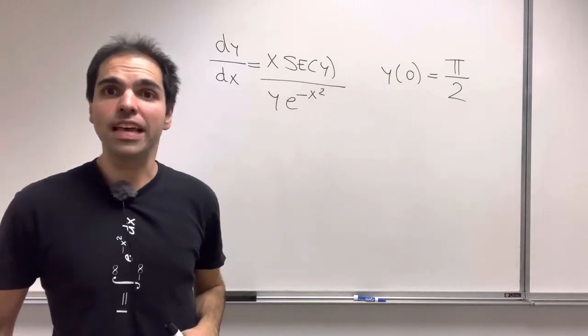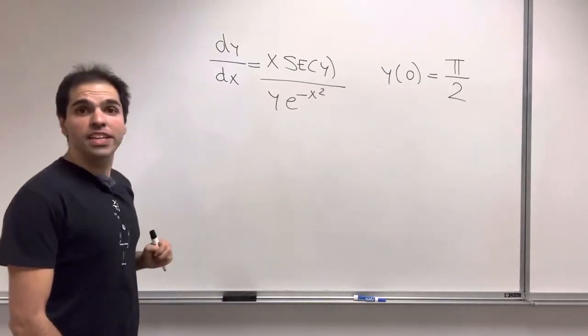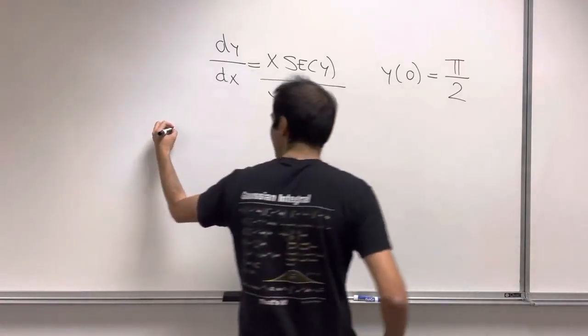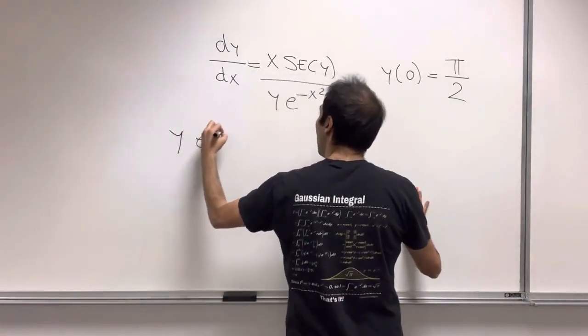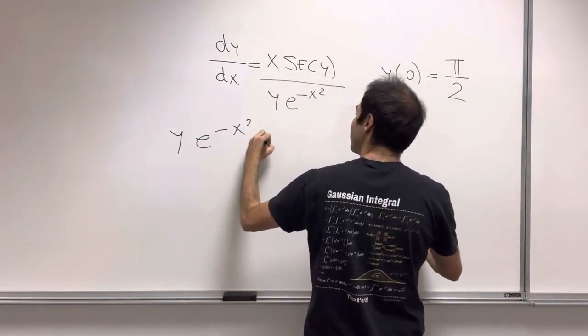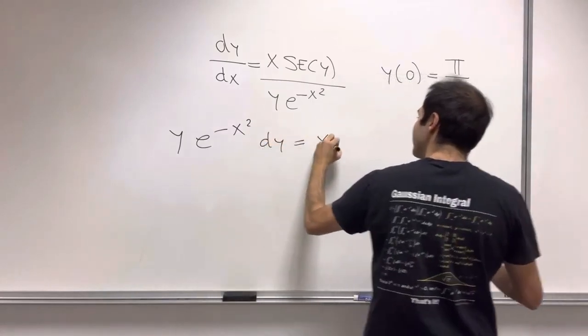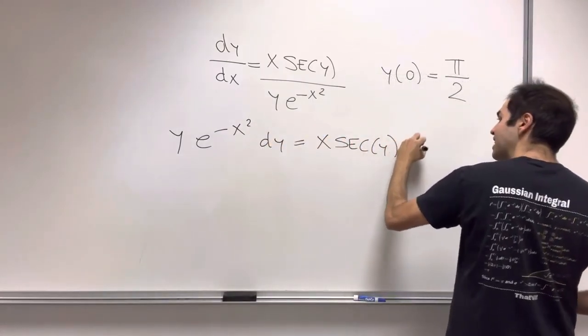All right, let's solve an equation using separation of variables. So here, the first step is to cross multiply to get y e to the minus x squared dy equals x secant of y dx.